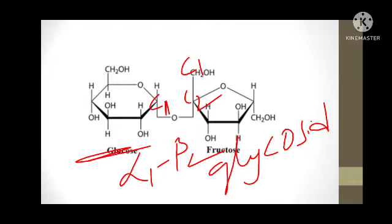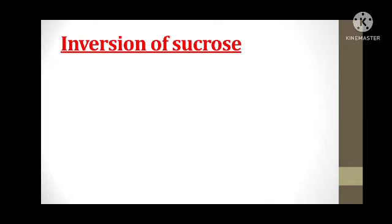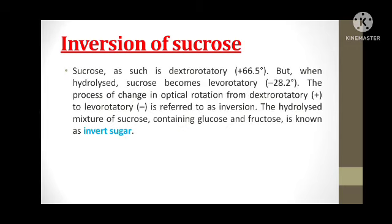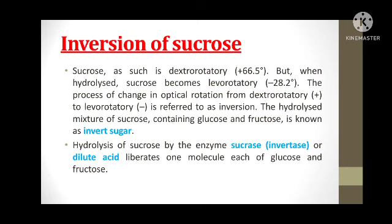The next concept is inversion of sucrose. Sucrose is dextrorotatory, exhibiting +66.5 degrees optical rotation. But when sucrose is hydrolyzed, it becomes levorotatory at minus 28.2 degrees. This change of optical rotation from dextrorotatory to levorotatory is called inversion, and that is why sucrose is called an invert sugar. Hydrolysis of sucrose by the enzyme invertase or dilute acids liberates one molecule of glucose and one molecule of fructose.